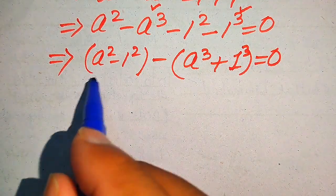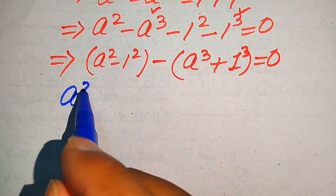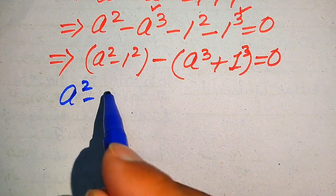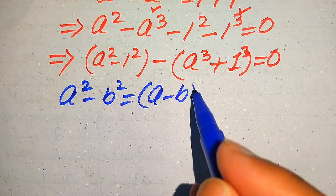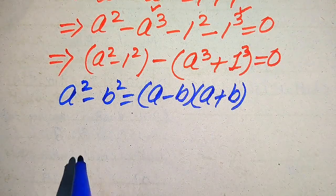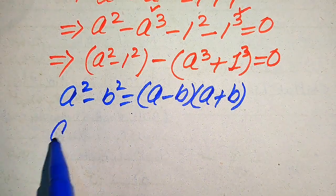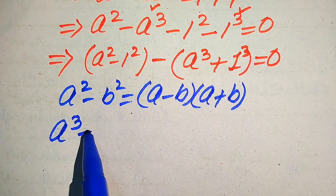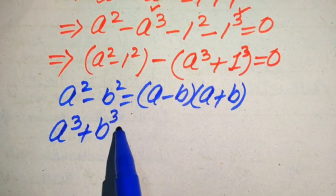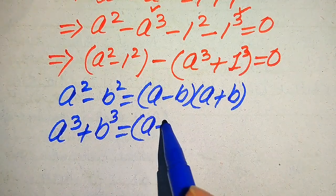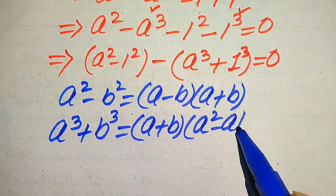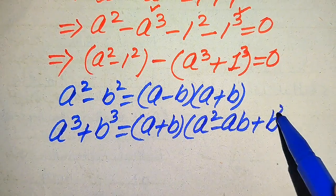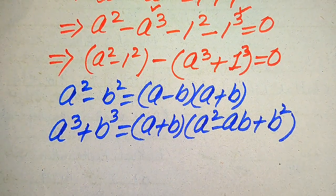We need two algebraic formulas to solve this equation. The first is the difference of squares: a squared minus b squared equals (a minus b)(a plus b). The second is the sum of cubes: a cubed plus b cubed equals (a plus b)(a squared minus ab plus b squared).